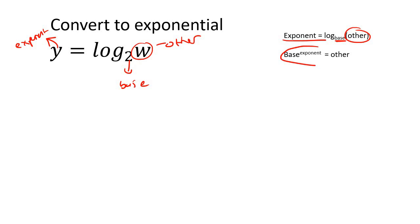So now you just copy this one to write it as an exponential. So you start with the base which is 2, you take the exponent which is y, and then the other is w.